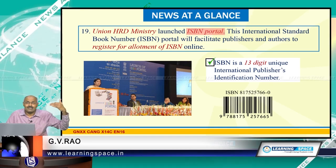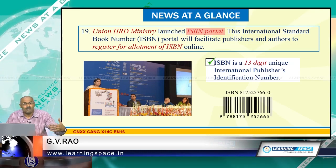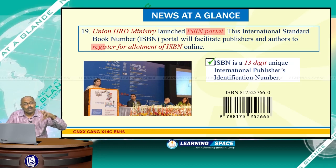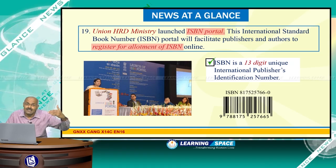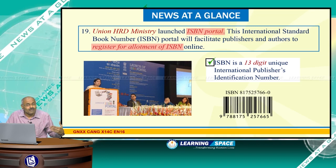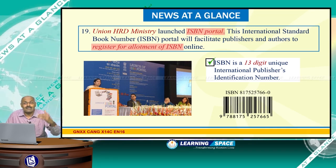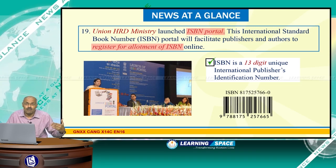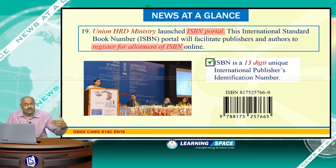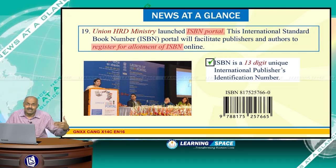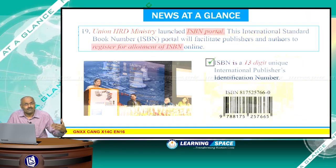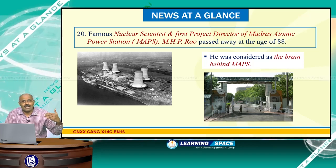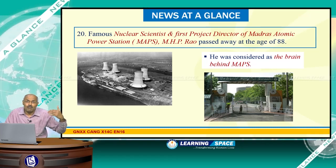The Union Human Resource Development Ministry launched the ISBN portal. ISBN is a 13-digit unique International Standard Book Number — an international publishers' identification number. This portal will facilitate publishers and authors to register for allotment of ISBN online, so each book will have its own unique 13-digit number.